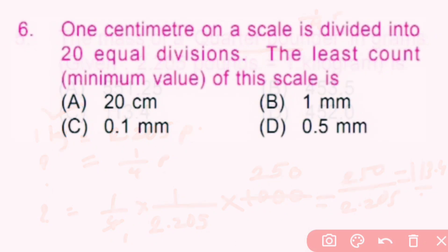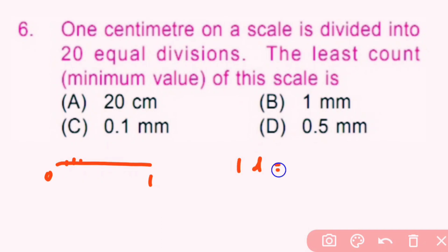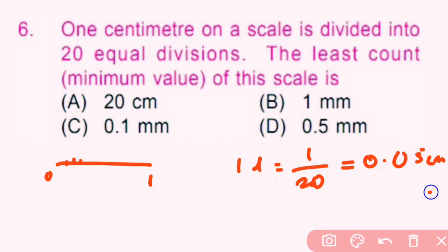250 divided by 2.205 gives approximately 113.4 grams, so C is the correct answer. Question number 6: 1 centimeter on a scale is divided into 20 equal divisions. The least count of this scale is — one division equals 1/20, which is 0.05 centimeter. And 0.05 centimeter equals 0.5 millimeter.